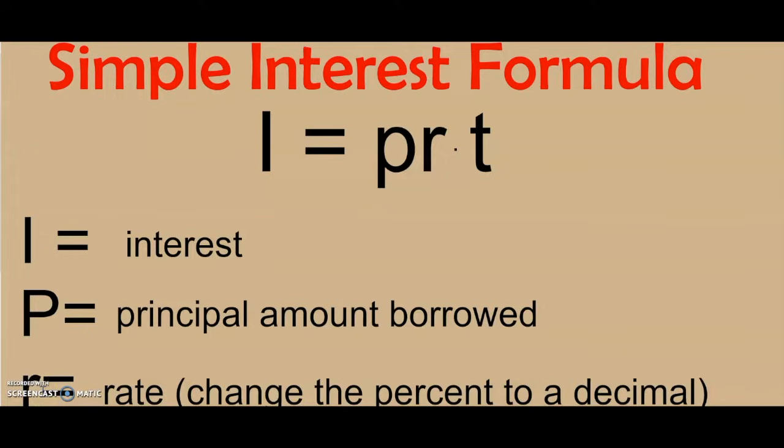Let's talk about finding simple interest. The formula for finding simple interest is I equals PRT. Each of these letters in this formula stands for something. Let's discuss what they stand for.